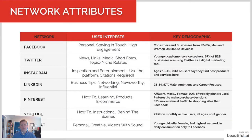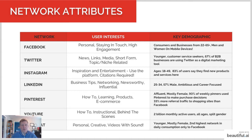Here are some network attributes with key demographics for each platform. Facebook: consumers and businesses, ages 22 to 65-plus, men and women, mostly on mobile devices, very personal network with high engagement. I believe all businesses — whether B2B or B2C — should have a strategy for Facebook. Twitter is more news-related, short-form, very niche and topic-related, popular for customer service, typically younger users, and 67% of B2B businesses use Twitter as a digital marketing tool.